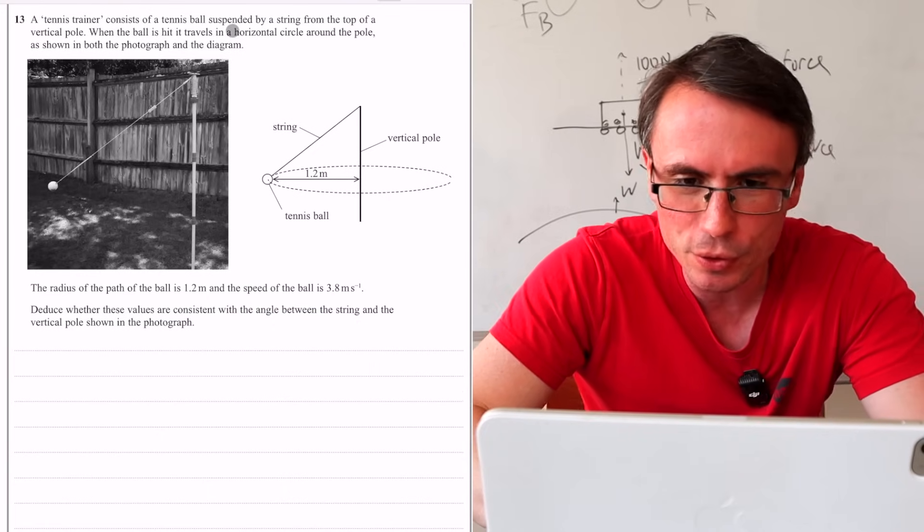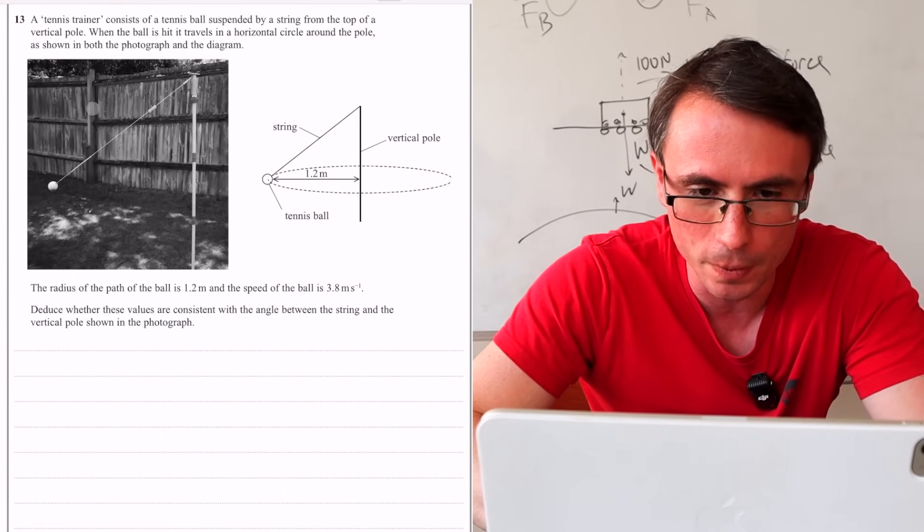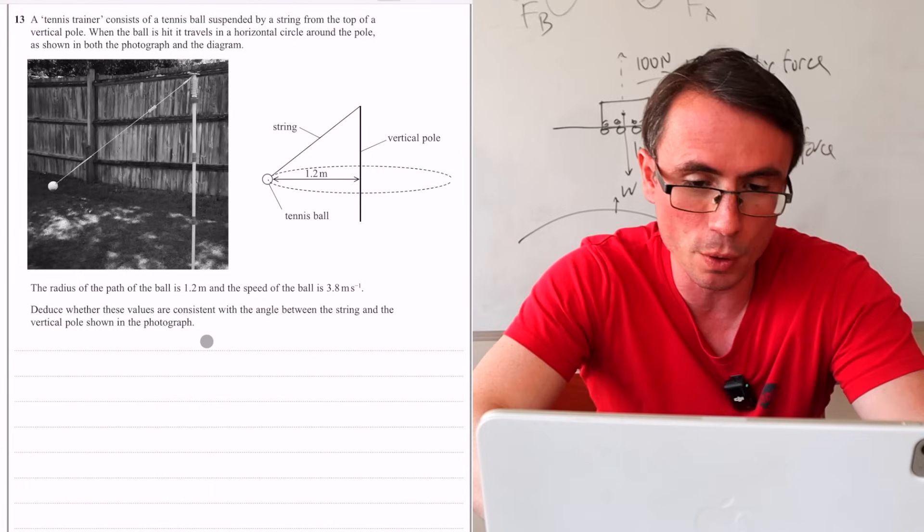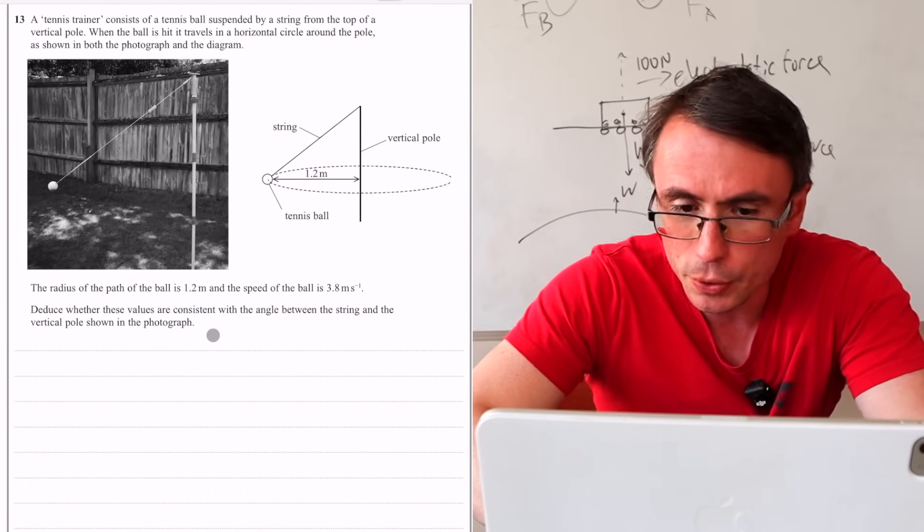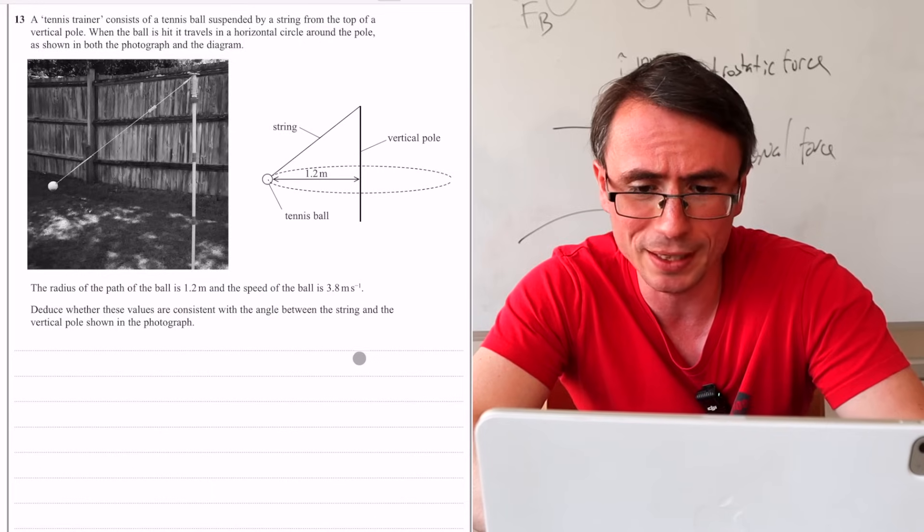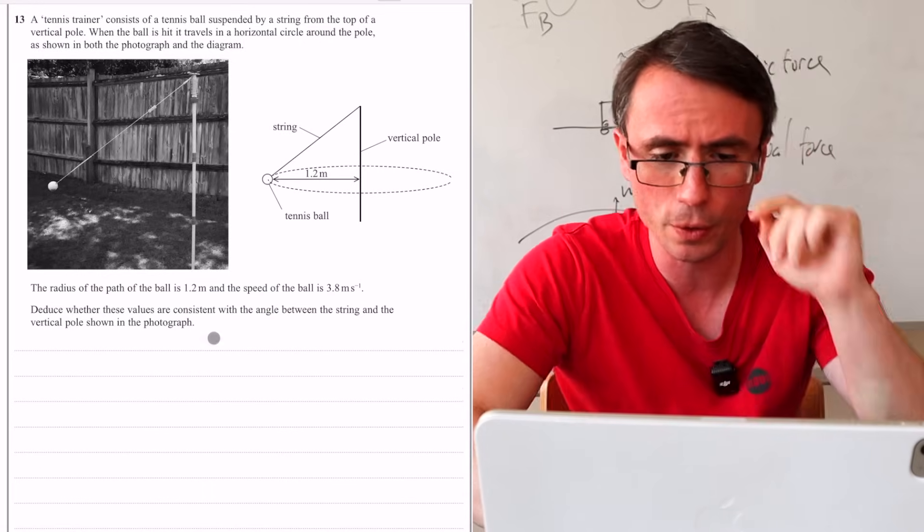When the ball is hit, it travels in a horizontal circle around the pole, and that's shown in the picture. The radius of the path of the ball is 1.2, speed of the ball is that. Deduce whether these values are consistent with the angle between the string and the vertical pole shown in the photograph.